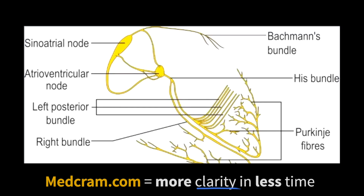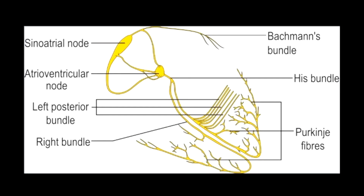Zooming in a bit more, let's pull away the muscular activity and look specifically at the conduction system. It's very important to understand that these are not nerves — these are modified myocardial cells that conduct electricity very quickly. The first one to know is the sinoatrial node, at the very top. The reason it is the pacemaker is that its intrinsic activity is the fastest, causing depolarization to occur all the way down — it is the conductor of the concert.